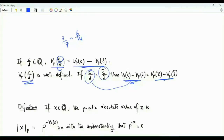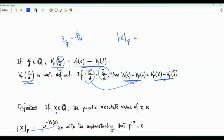Now to the main point: we are defining an absolute value that is non-negative, zero if and only if x equals zero, and satisfies multiplicativity and the triangle inequality. The claim is that we can define the p-adic absolute value of the rational number x as p to the power minus the valuation of x. If x equals zero, the valuation is infinity, and we take p to the minus infinity to equal zero, so the p-adic absolute value is zero if and only if x equals zero.